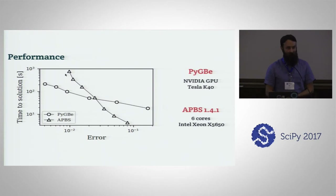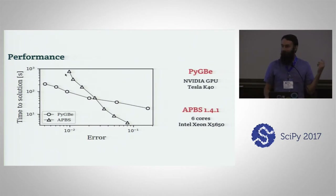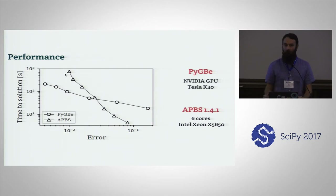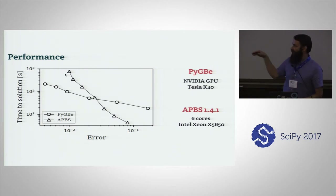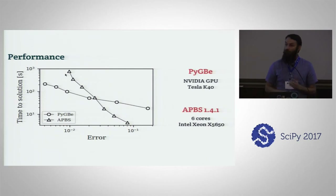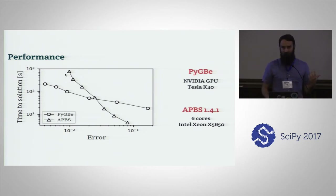On performance — there are many caveats with this slide. We're comparing against APBS, the current standard in the field for Poisson-Boltzmann simulations. We're comparing a GPU to a CPU, which I mean is a bit ridiculous, but we look at PyBIE as a workstation tool. Looking at the graph, error decreases going left. If you want an error less than about 2%, that's roughly where our crossover point is and where PyBIE will outperform APBS in this configuration. With that, I'm going to turn it over to Nati, who will talk about new directions.